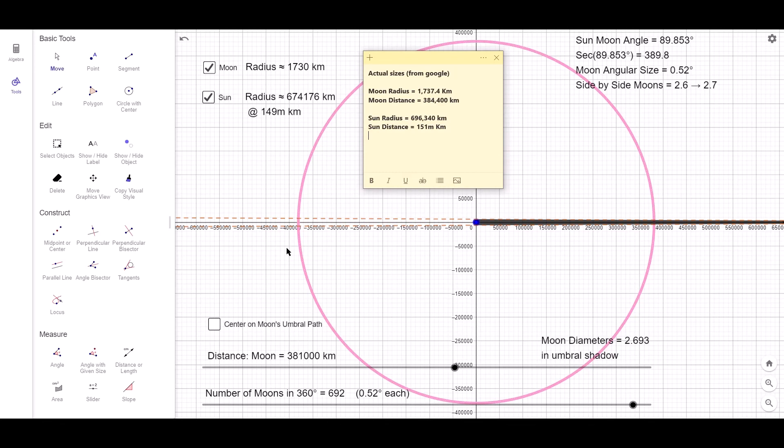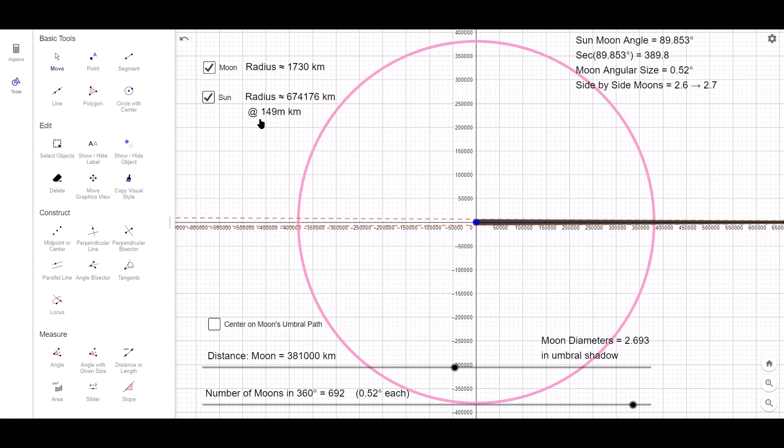So let me compare values. I have about 1730 kilometers for the moon's radius. For the moon's orbital distance, Google says 384,000 kilometers. I've got 381. For the Sun's radius, I've got 674,000 kilometers. Google says 696,000. And for the distance, Google says 151 million kilometers. And I've got 149 million kilometers. So that's all within 1 or 2%.